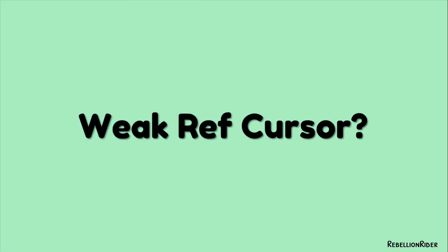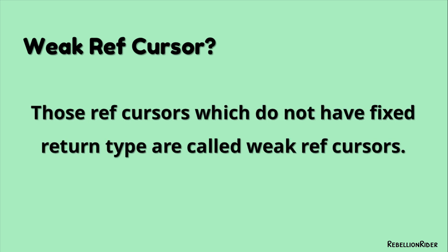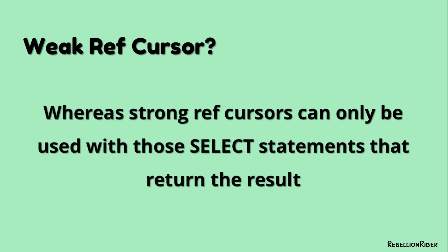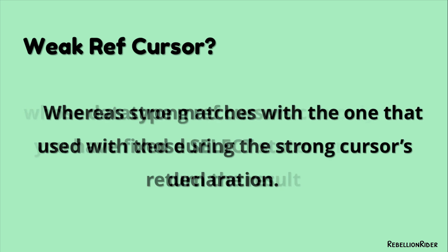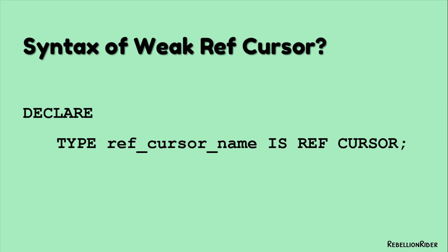In contrast to strong ref cursors, weak ref cursors are those which do not have any return type. In simple words, ref cursors without a fixed return type are called weak ref cursors. Such cursors are the most frequently used ref cursors as they are open to all SELECT statements, whereas strong ref cursors can only be used with SELECT statements that return results whose data type matches the one fixed during the strong cursor's declaration. The syntax of weak ref cursors is pretty much similar to strong ref cursors, except for the missing RETURN clause.